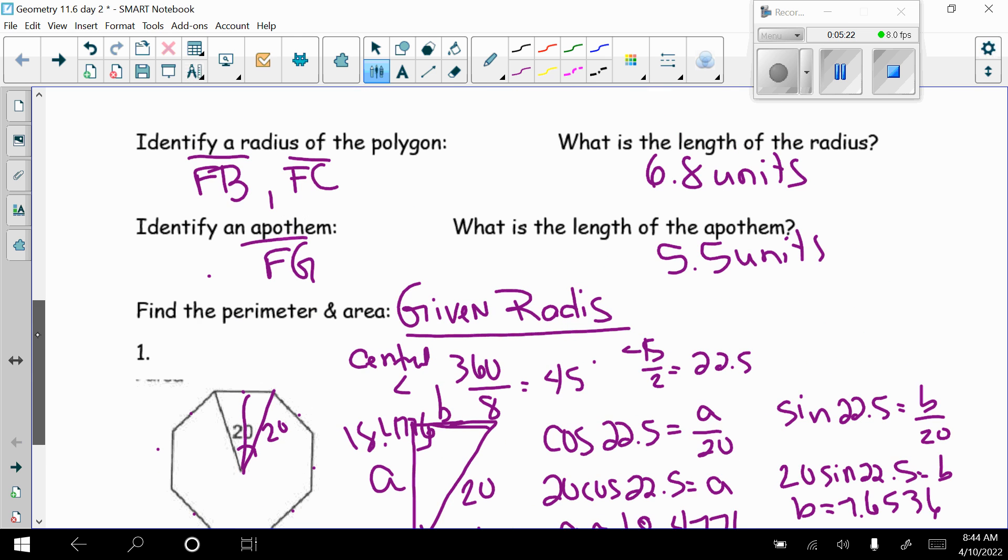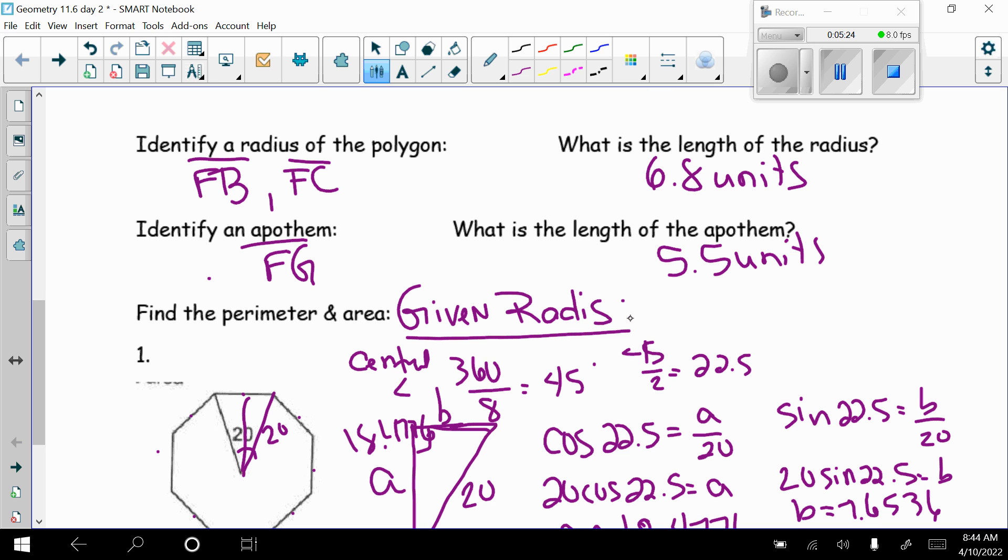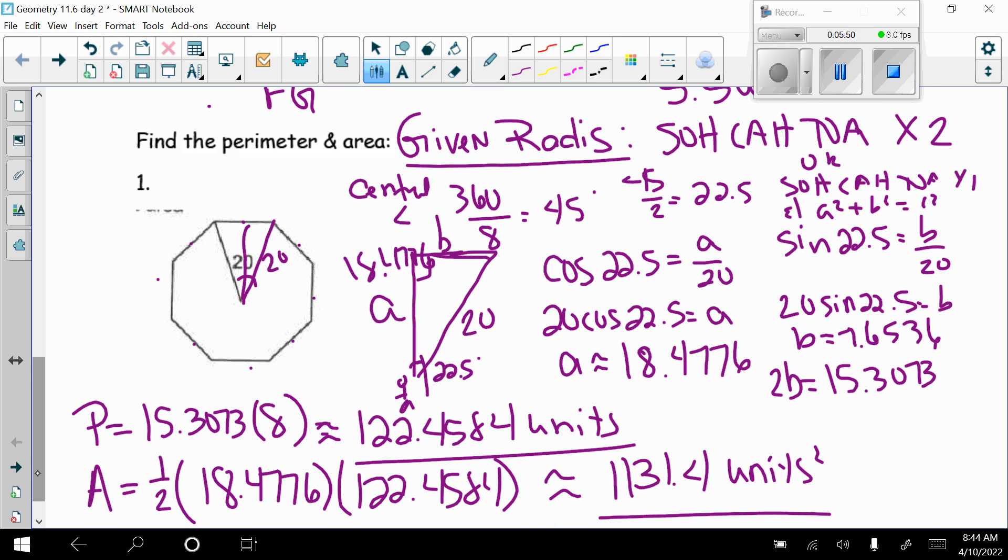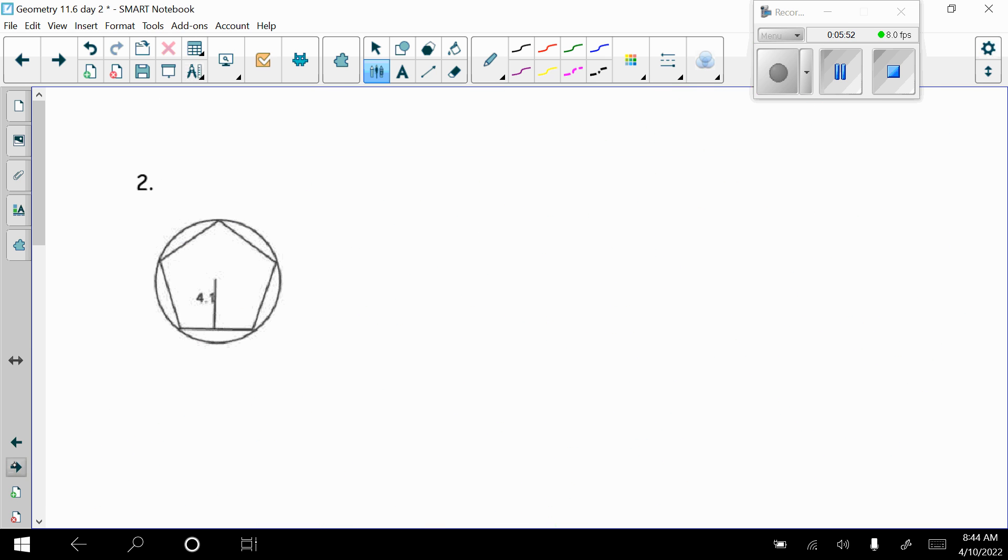So when all I'm given is the radius, I need to do SOHCAHTOA twice. So SOHCAHTOA times 2 or SOHCAHTOA once and then A squared plus B squared equals C squared. I prefer SOHCAHTOA twice.